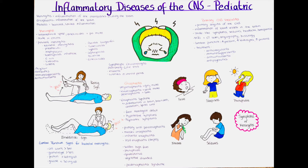Purulent meningitis is caused among others by Neisseria meningitidis, Pneumococci, Staphylococci, Haemophilus influenzae, Escherichia coli, Pseudomonas, Klebsiella and Listeria. It is mainly characterized by pus collections over the hemispheres of the brain. Other bacterial agents include tuberculosis, syphilis, leptospirosis and brucellosis. Viral meningitis is often an accompanying disease to a general systemic infection, making it a secondary meningitis. It is mainly caused by Borrelia burgdorferi, the causative agent of Lyme disease.